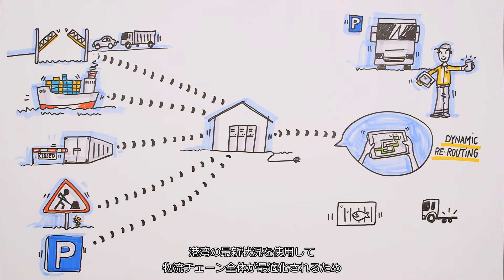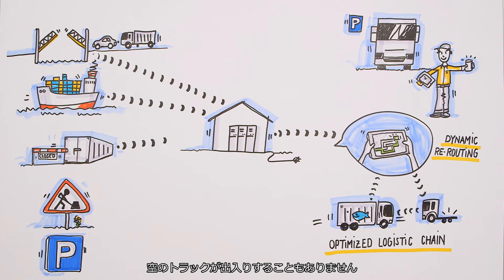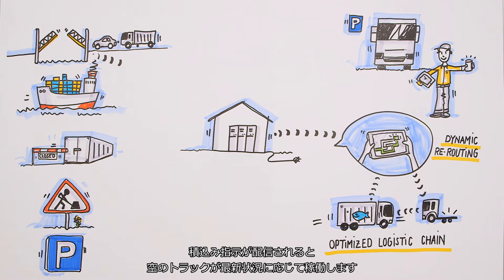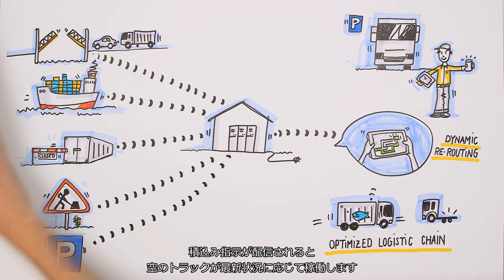The current situation in the harbor is also used to optimize the entire logistic chain to avoid empty trucks driving in and out. Shipment orders will be distributed and empty trucks will get their assignment based on the latest situation.